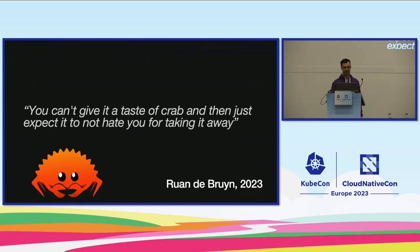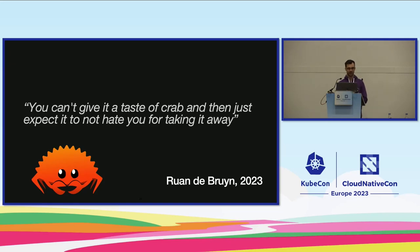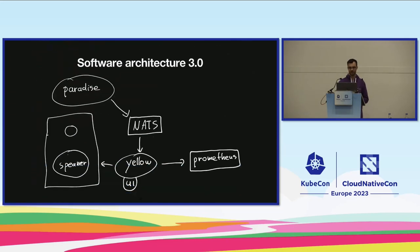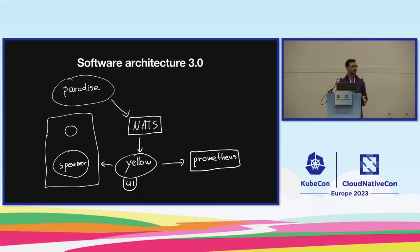In the end I couldn't get it to work. I was talking to my colleague Ruan again and he said: 'You can't give it a taste of Rust and then just expect it to not hate you for taking it away.' Ferris is the unofficial crab mascot of Rust, and I think he was right. So I adapted the infrastructure again — Software Architecture 3.0: Paradise is now written in Rust and only takes measurements and writes them to NATS. Then there's what I call the 'duolith' — written in Go — that takes all the measurements, articulates the speaker, updates the user interface, and sends measurements to Prometheus. This has been running stably for a few months now with no sensor issues.